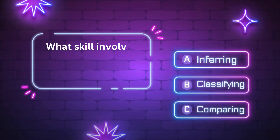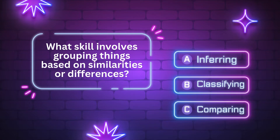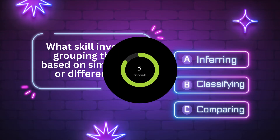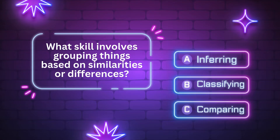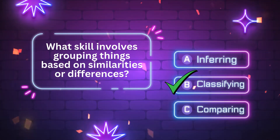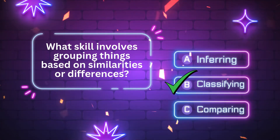First question. What skill involves grouping things based on similarities or differences? A. Inferring. B. Classifying. C. Comparing. The answer is letter B. Classifying. Great job. Let's move on to the next question.